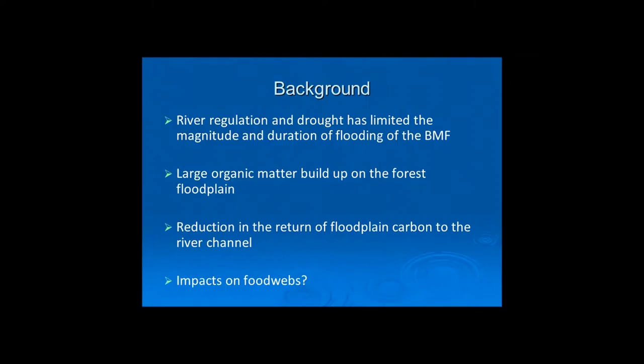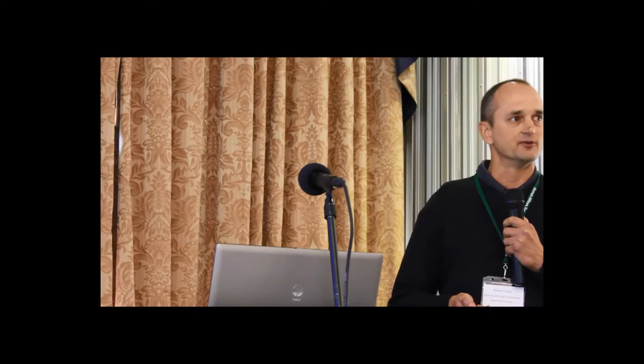The Barmah-Millewa Forest had no real flooding for about five years. River regulation and drought has limited the magnitude and duration of flooding of the forest. During this time, large organic matter builds up on the forest floodplain, and therefore there's a reduction in the return of floodplain carbon to the river channel. What we're interested in is whether this is important for the river's food webs.